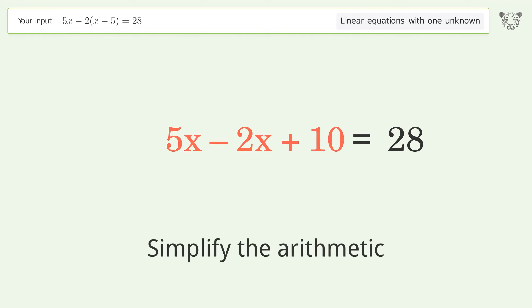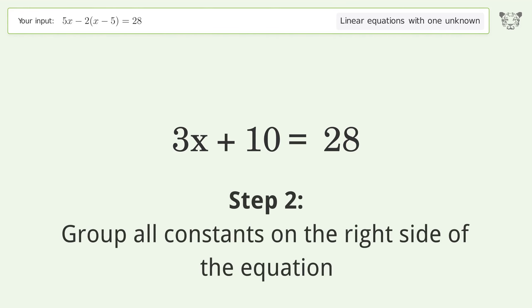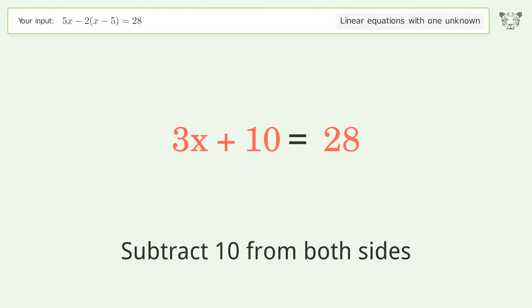After simplifying the arithmetic, we get 3x + 10 = 28. Step 2: Group all constants on the right side of the equation by subtracting 10 from both sides.